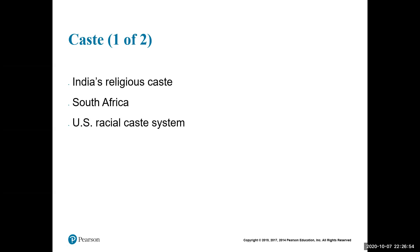In South Africa, apartheid is a government-approved and enforced separation of racial and ethnic groups. They separate European whites, African Blacks, Coloreds (mixed race), and Asians, and these classifications determine where people live, work, and go to school — that's a caste system. In the US we also have a racial caste system. From the moment of birth, race has marked people's lifestyles; even poor, uneducated white people considered themselves higher status than anyone else.